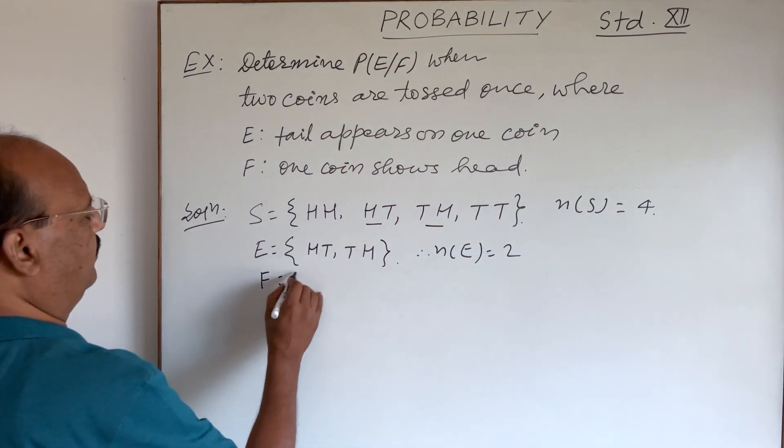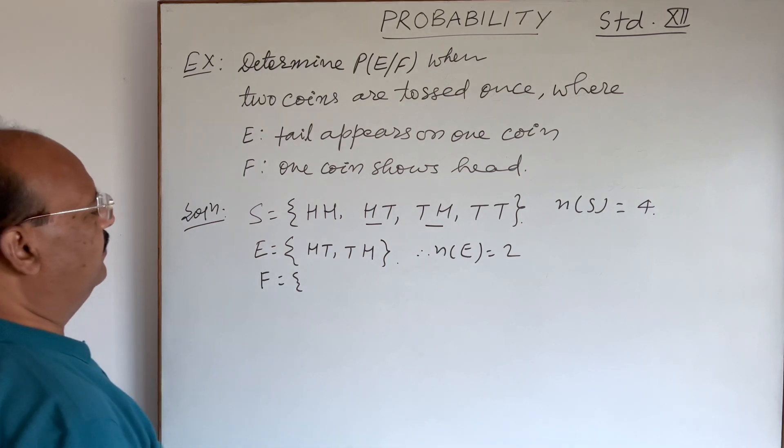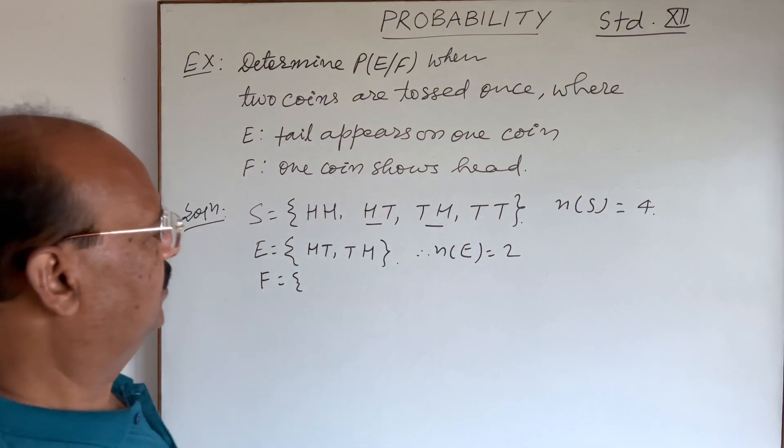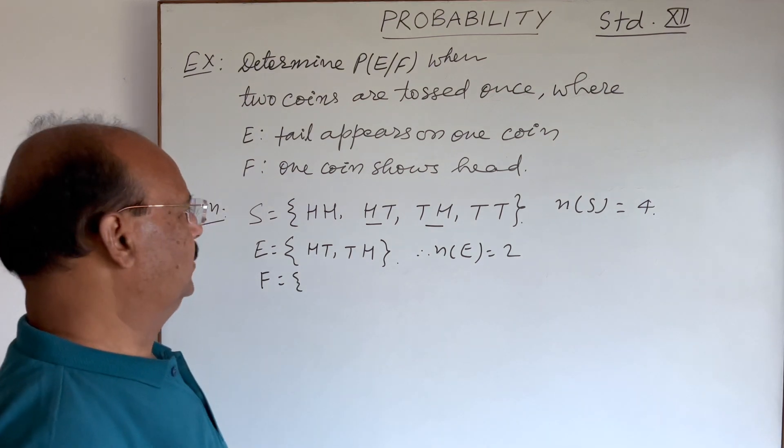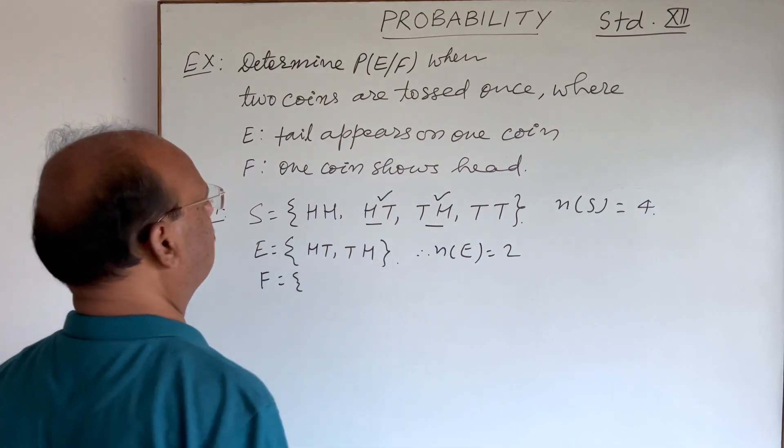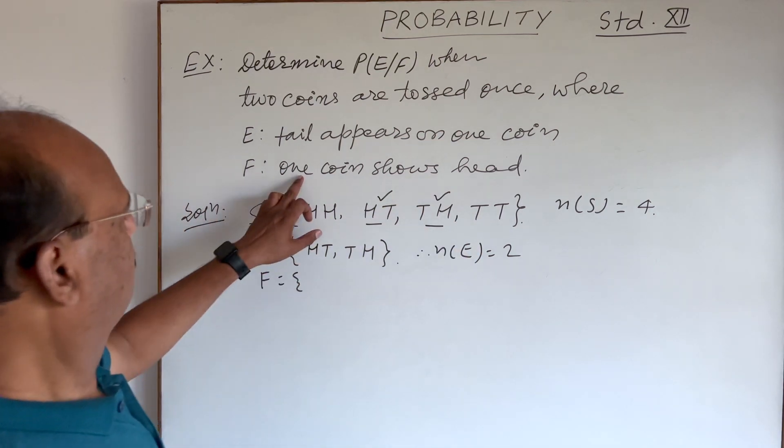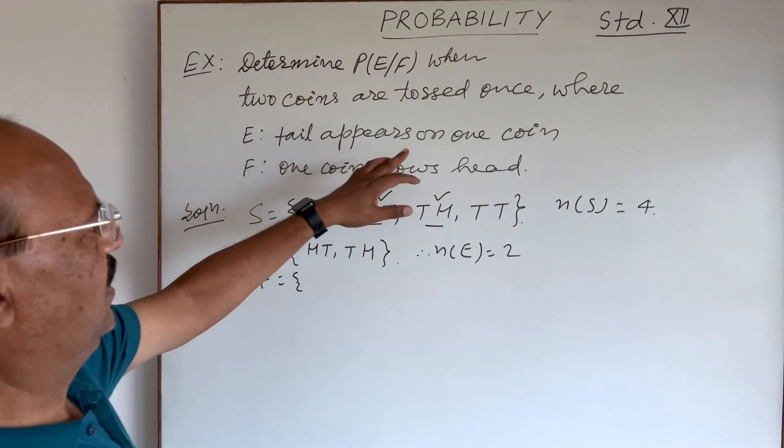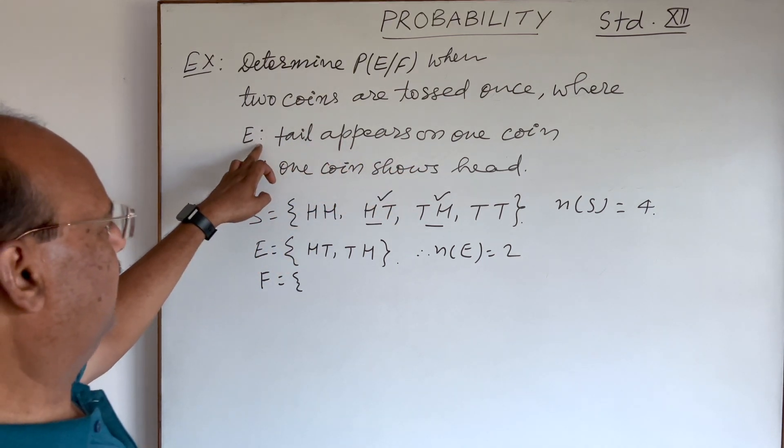And event F, a set of elements where one coin shows head. Only one coin shows head. So these are 2 cases. Fine. There is difference in these two. Tail appears on one coin. This is event E.